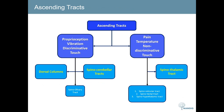Ascending tracts can be split into conscious and unconscious perception. We'll be splitting them into the type of perception they carry. On the left-hand side you see proprioception, vibration, and discriminative touch, and on the right-hand side you see pain, temperature, and non-discriminative touch. Discriminative touch is the ability to discriminate between two points on your skin and the position of where you're being touched. Proprioception, vibration, and discriminative touch are carried by the dorsal columns and the spinocerebellar tract, which we will cover today. Pain, temperature, and non-discriminative touch are carried by the spinothalamic tract, which we will also cover today.